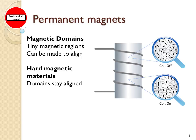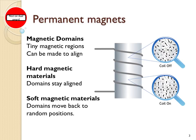Hard magnetic materials are materials in which the domains stay aligned after you've caused them to be aligned — you can make them be aligned, in this case by supplying a current around this coil of the electromagnet. Soft magnetic materials are materials where the domains move back to random positions after you take away the magnetic field that caused them to move in the first place.